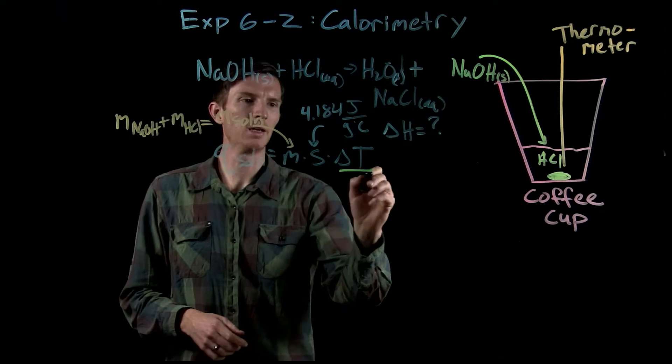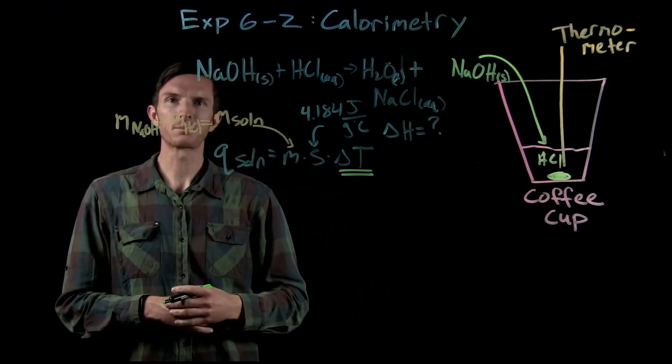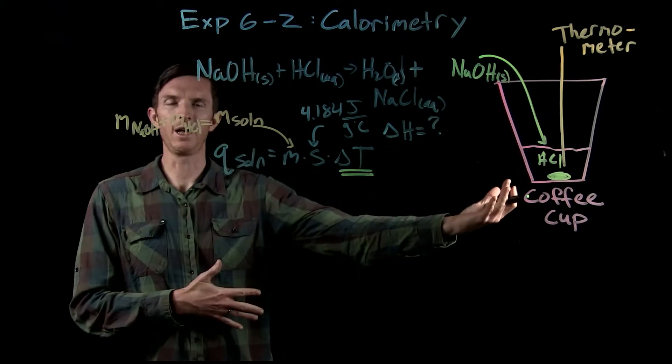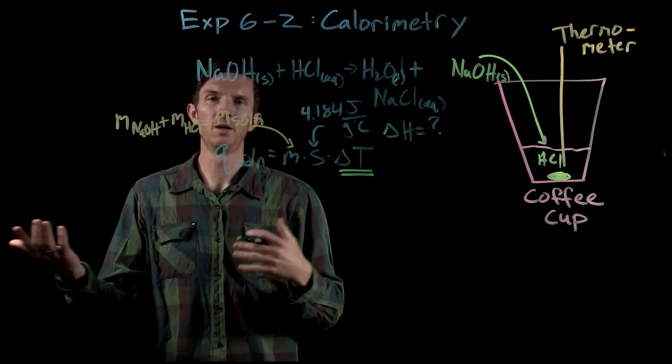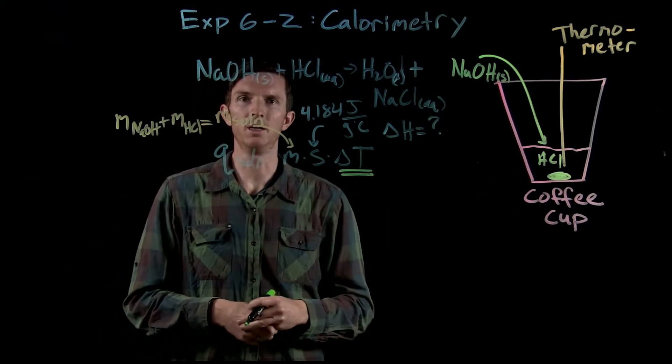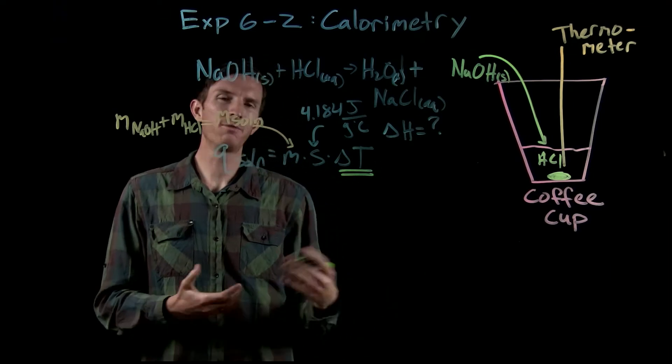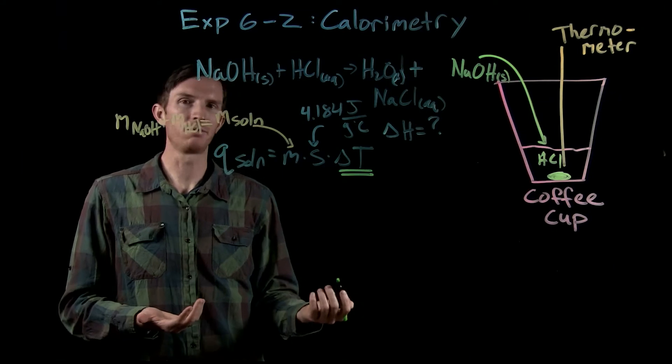The final piece is our change in temperature. Now in class, usually you're just told the initial temperature was x, the final temperature was y, you could easily calculate the delta T. Well, here we're going to have to experimentally determine our delta T, and in order for us to do that, we're going to get a graph.